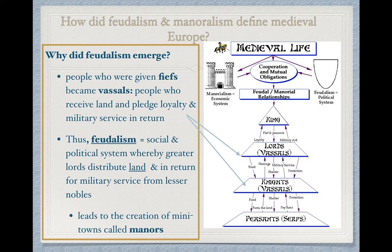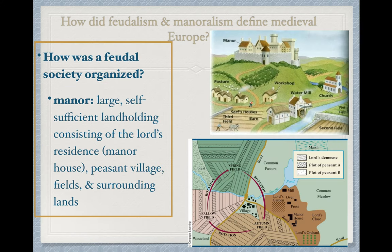What this leads to is the creation of essentially mini towns. Think of the fief as Washington, D.C., and the manor is the life built on top of it. The feudal society is organized into manors — large, self-sufficient landholdings. Self-sufficient means they do not depend on anybody else. These consisted of a lord's residence, called the manor house, typically even in the form of a castle with walled areas so that all townspeople could come inside for protection if needed.